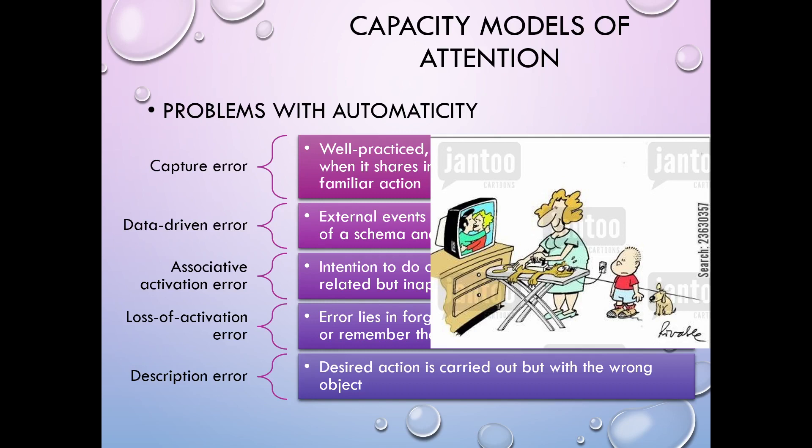So you're refrigerating something that doesn't need to be, and not refrigerating something that does. Some of these can be mixed examples — none are pure. You can be doing a data-driven error that's also an example of a description error. They can be combined, but it's a pretty good list of why maybe we shouldn't all wish that everything was automatic, because we'd be making mistakes all the time.